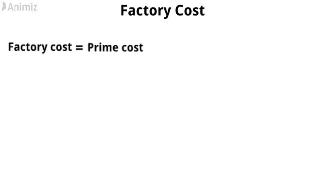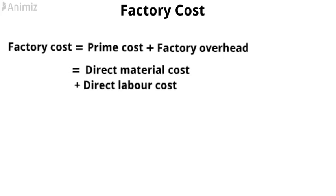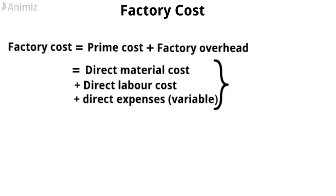Let's move on to Factory Cost. Factory Cost is the addition of prime cost and factory overhead. That means: Factory Cost equals Direct Material Cost, plus Direct Labor Cost, plus Direct Expenses (which is variable), plus Factory Overhead.